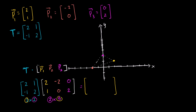Let's go step by step. The first entry, first row first column, is this row times this column: two times two is four, plus one times one is one, so four plus one equals five. Then negative one times two is negative two, plus two times one is two — that's negative two plus two, which is zero. So we already see it transformed two comma one to five comma zero. If we consider this P1, we consider this P1 prime — P1 after our transformation.